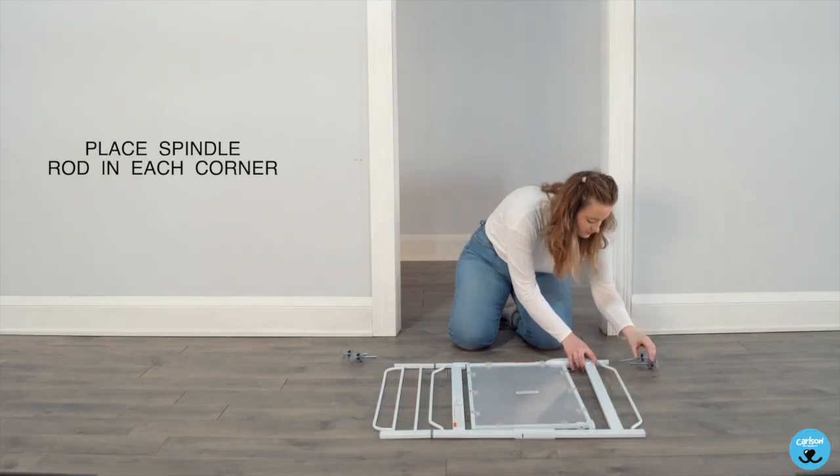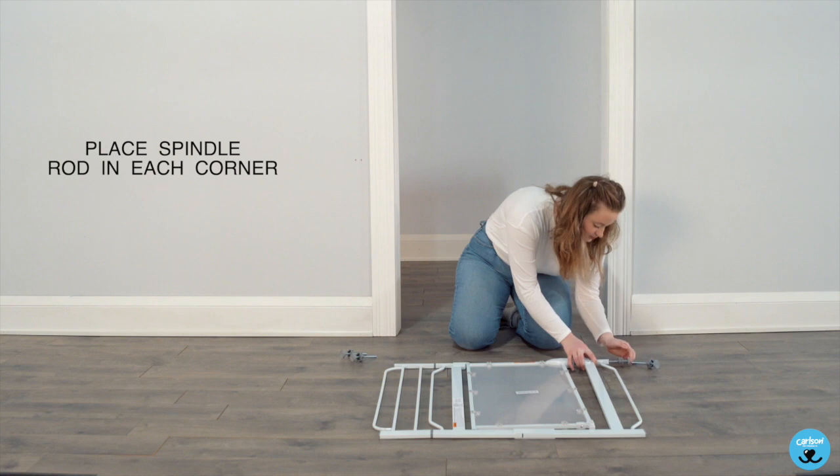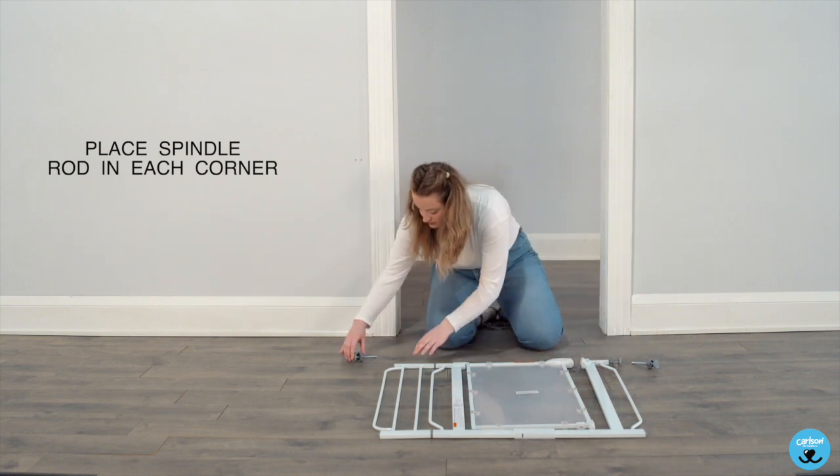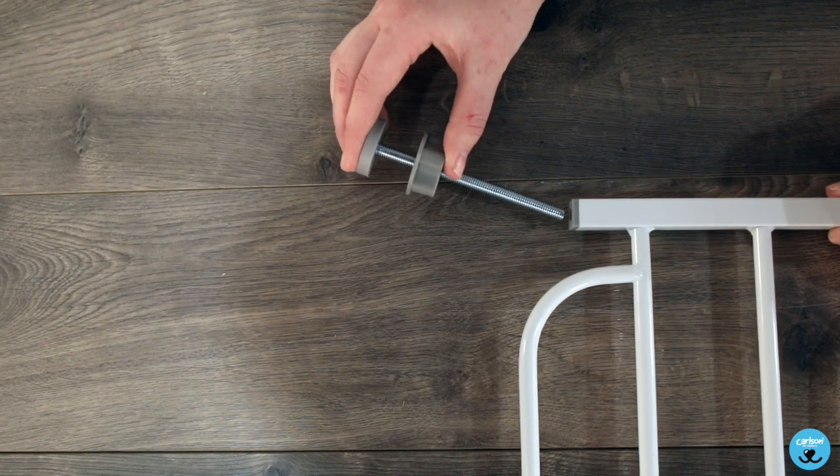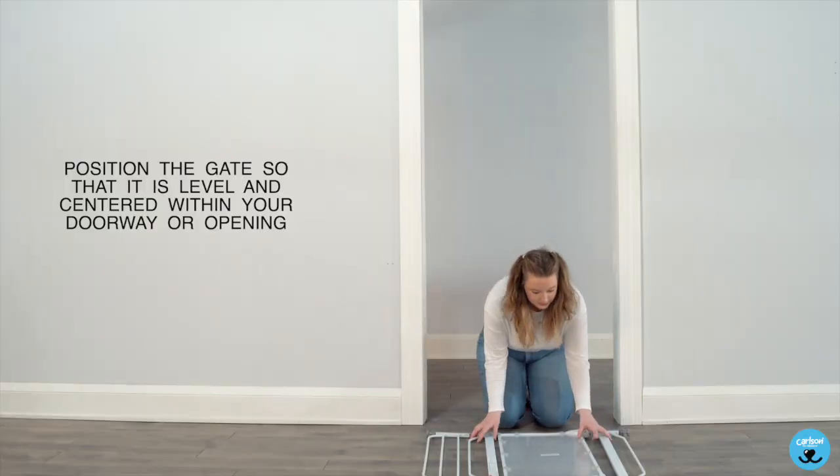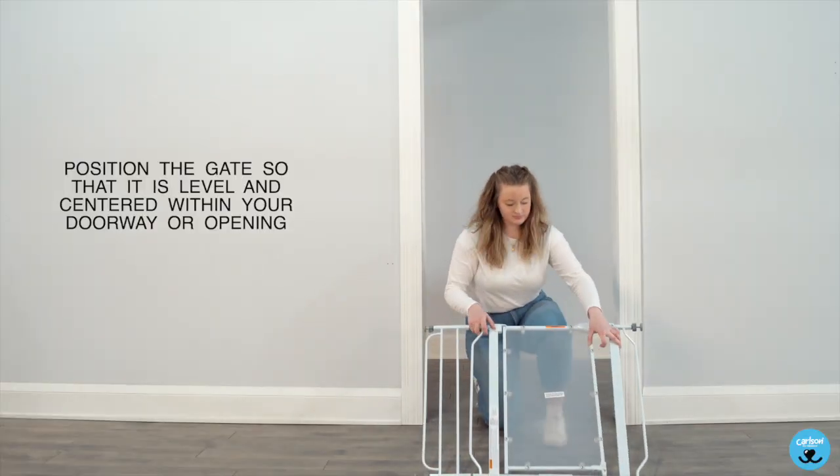Place spindle rod in each corner. Position the gate so that it is level and centered within your doorway or opening.